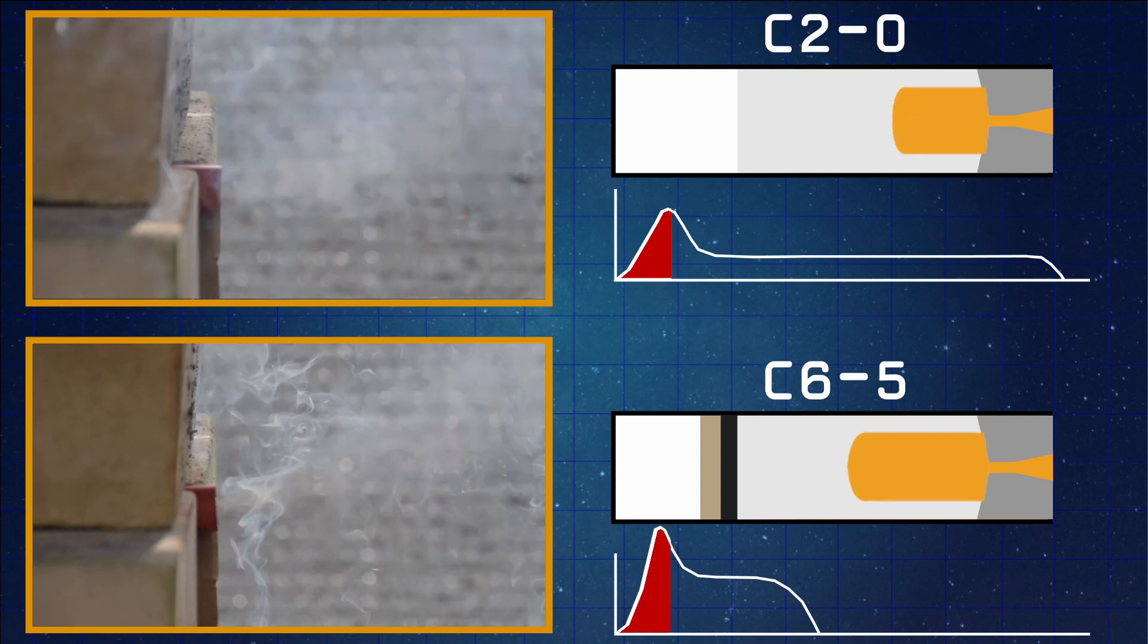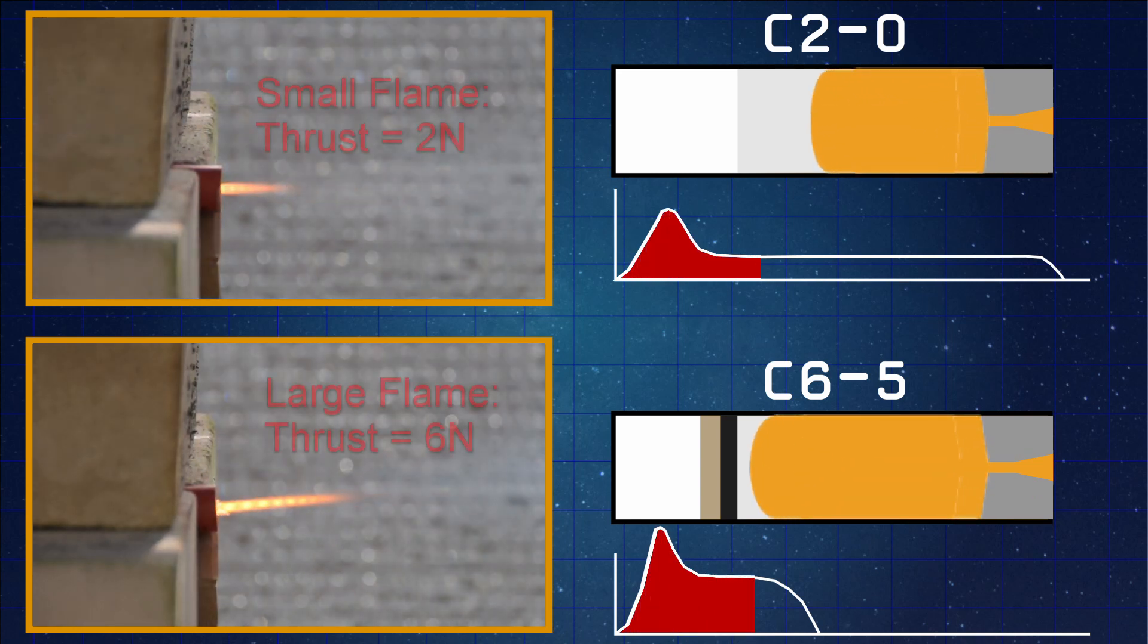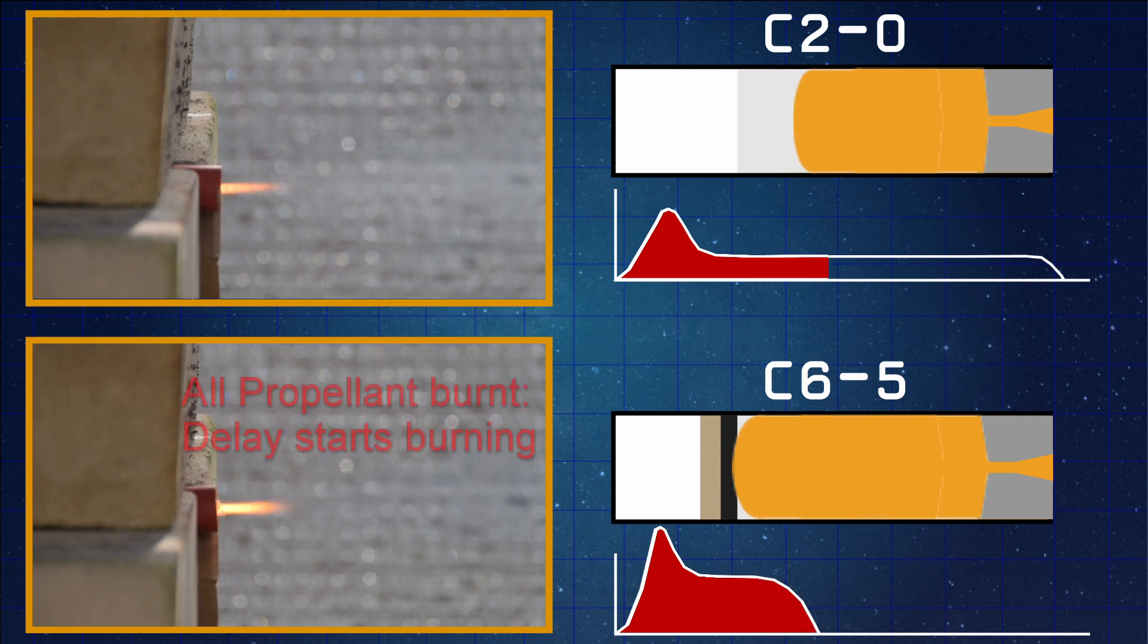The force that a solid rocket motor can generate works primarily on the principle of how much surface area is exposed to the hot combustion gases. So because the longer insert into the C6 motor has more surface area exposed at the start, it's able to burn through its propellant much quicker than the C2 motor.